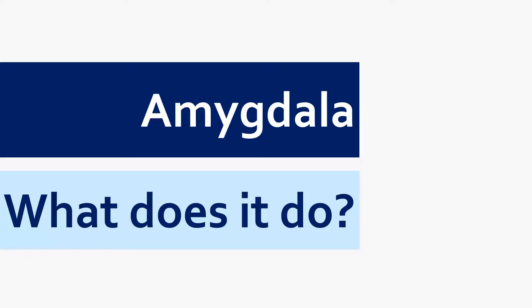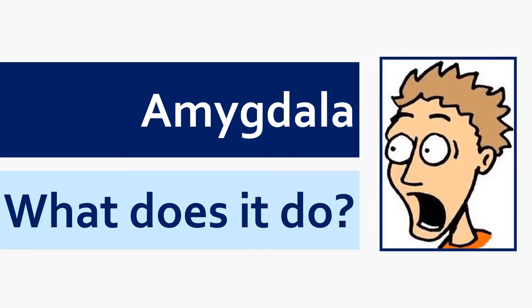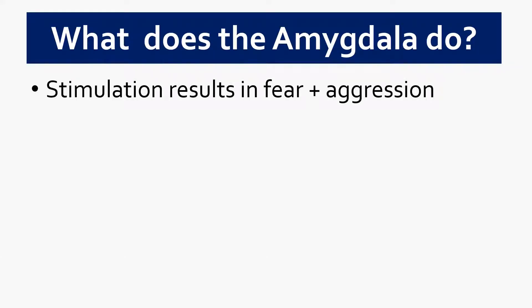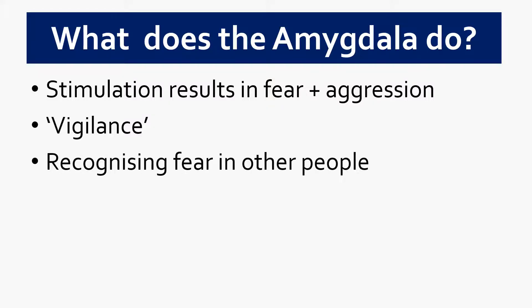If we had to sum up in one word what the amygdala does, that word would be fear. Stimulating the amygdala experimentally promotes and provokes fear and aggression. It's also responsible for vigilance — paying attention to external cues in our environment associated with fear. The amygdala is also very important for recognizing fear in other people; those with bilateral damage to the amygdala find it difficult to tell when someone else is afraid.